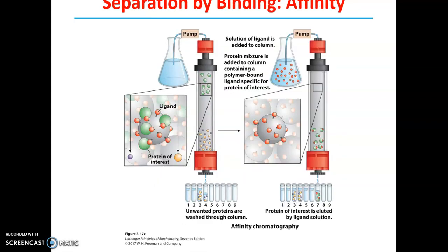This is also a separation based on affinity binding — separation based on binding. Affinity means having an affection or attraction for something. For example, hexokinase will have affinity for glucose, and other proteins will have affinity for their own particular type of substrates.